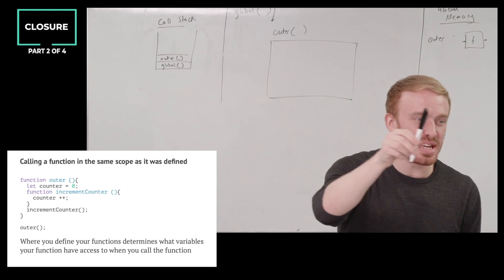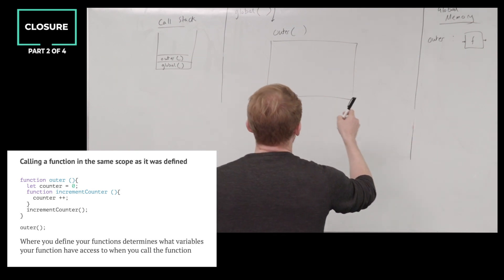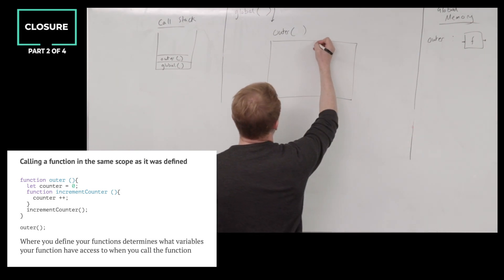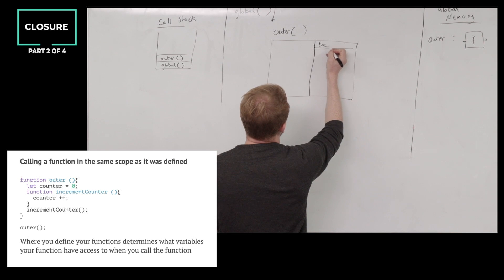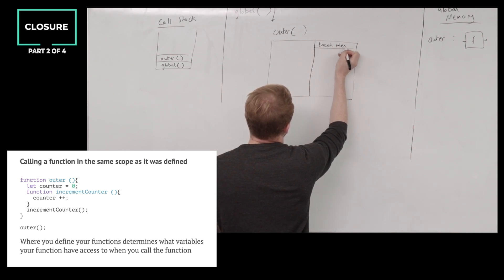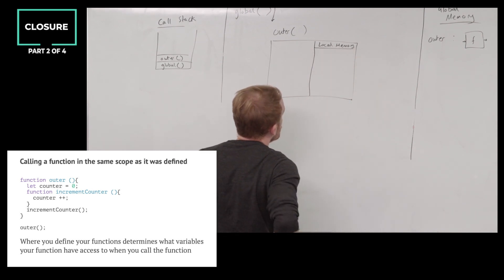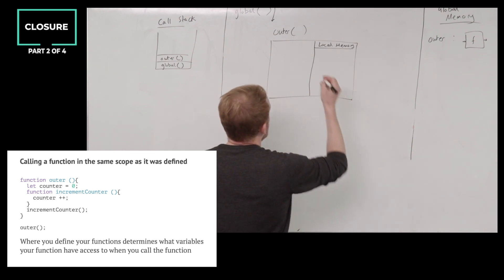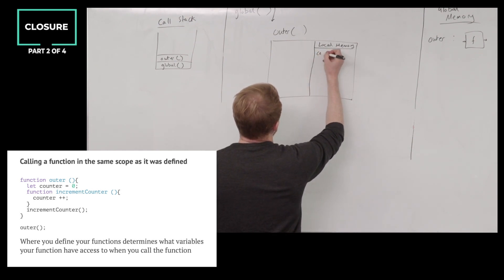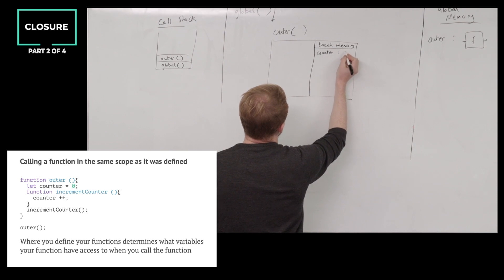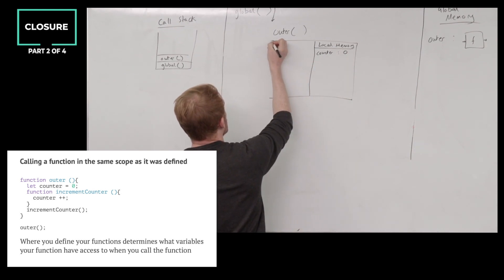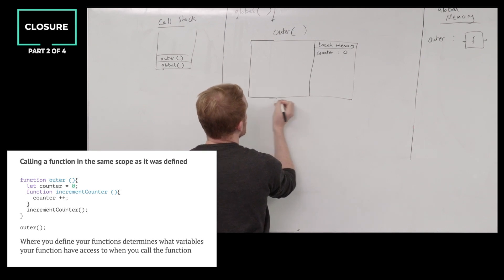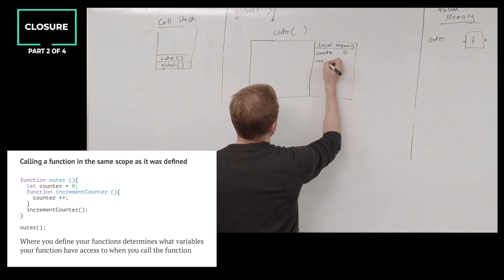Into the execution context of outer we go. The first thing that happens inside this execution context — we declare the local variable counter and set it equal to zero. Next line: we're declaring a function called increment counter in the local memory.